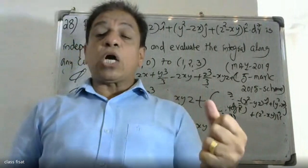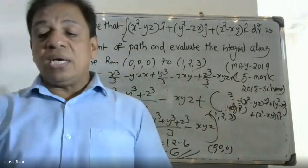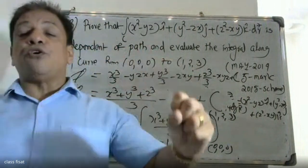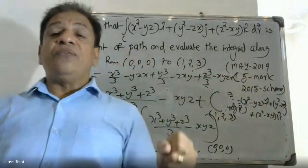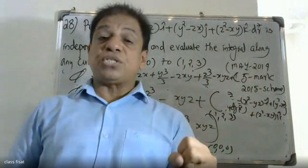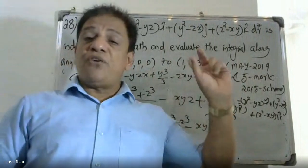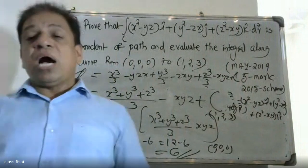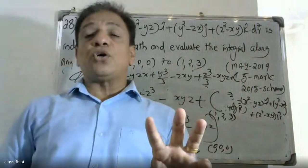Since del cross F equals zero, vector F is conservative. Therefore vector F can be written as the gradient of φ: F = ∇φ, where ∂φ/∂x, ∂φ/∂y, and ∂φ/∂z match the components of F by comparing coefficients of i, j, and k.